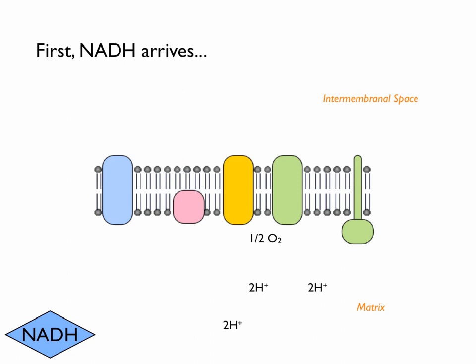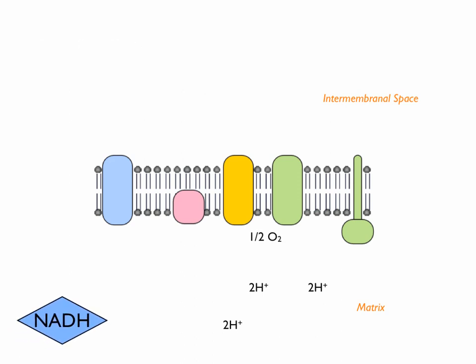NADH will arrive from Krebs cycle or the earlier stages of respiration and that will arrive at the first protein in the chain which is NADH dehydrogenase. NADH is going to be oxidized back to NAD and this yields two things: it yields two electrons and we also get some protons as well.